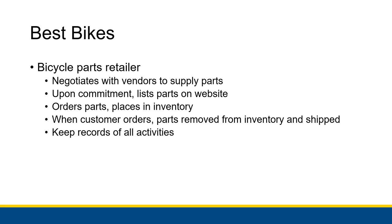Once everything is listed, they make an order from the vendor and place it in inventory. When the customer orders, they remove parts from inventory and ship them to the customer. Then they keep records of all activities — from the contracts with vendors, the orders made from vendors, and the orders that customers made from Best Bikes.